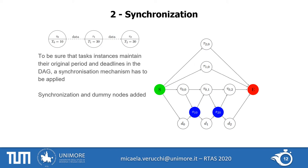The second step is synchronization. We have set the period of the DAG to the hyperperiod of the task set, but we want to ensure that every task keeps its own period. To do so, we insert a synchronization node that forces jobs to start before or after a certain time unit, and dummy nodes to distance the synchronization nodes.